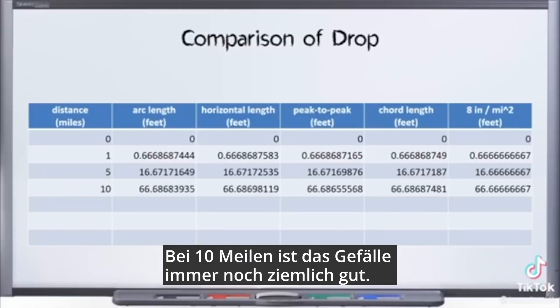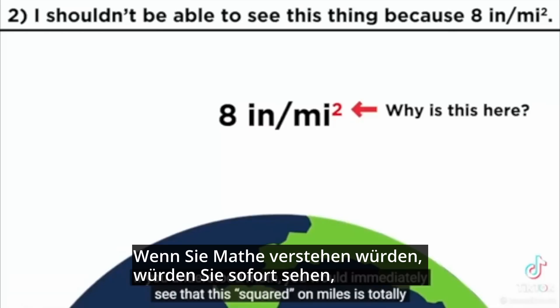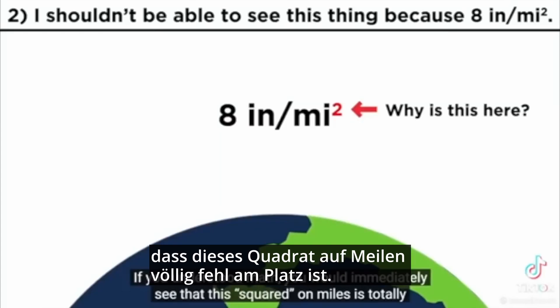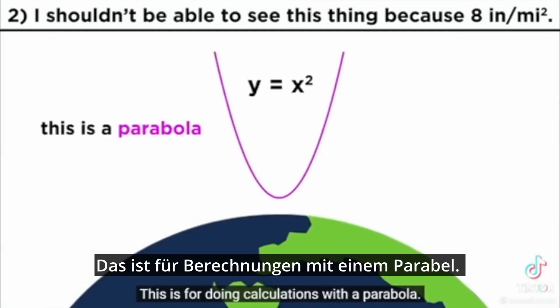At 10 miles, the drop estimate is still pretty good. Look at that — 'you can't calculate anything with it'? If you understood math, you would immediately see that the squared on miles is totally out of place. That's because this is a parabolic approximation — this is for doing calculations with a parabola.